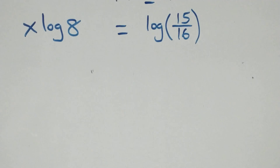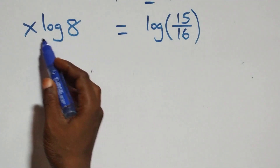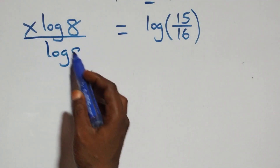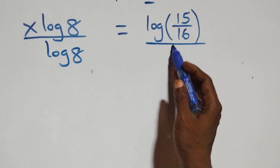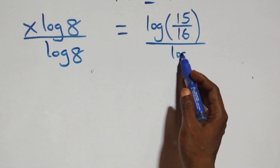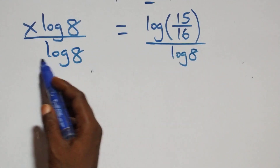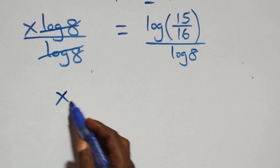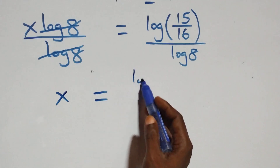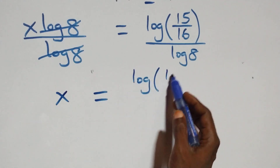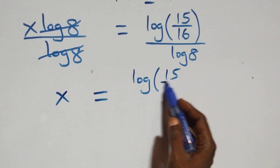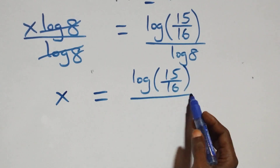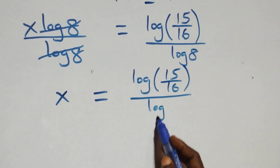Then the next step here, we divide both sides by log 8. We divide this side by log 8 and also divide this side by log 8. The log 8s cancel each other, so x equals to log(15/16) divided by log 8.